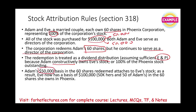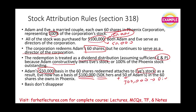Adam's basis of $50,000 is transferred to Eve. Say the company gave Adam $300,000 — that $300,000 becomes a dividend. His basis doesn't disappear; it transfers to his wife. Eve's new basis is $100,000 — her original $50,000 plus Adam's transferred $50,000. So when she sells her shares, her basis in the stock is $100,000. Basis is transferred to the person who kept you deemed as an owner.